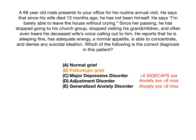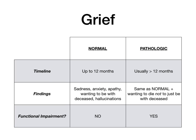That's the big takeaway. Hallucinations are fine in grief. Sadness, anxiety, and apathy are fine. Wanting to die in order to be with your loved one is fine — that's normal grief. But wanting to die simply because you're sad, or if symptoms last more than 12 months, or if there's functional impairment — that's pathologic grief. These psychiatry questions will pop up on USMLE and COMLEX all the time, so keep up the strong work.